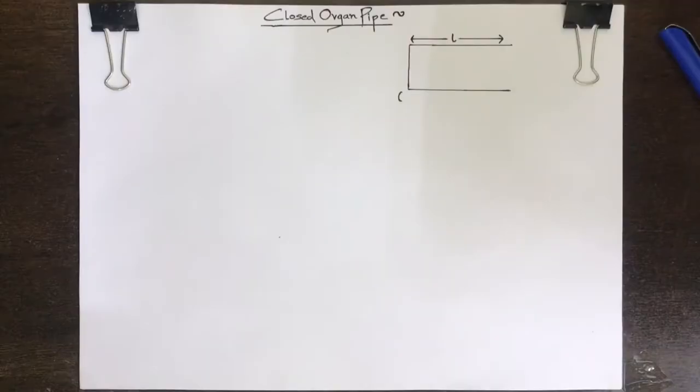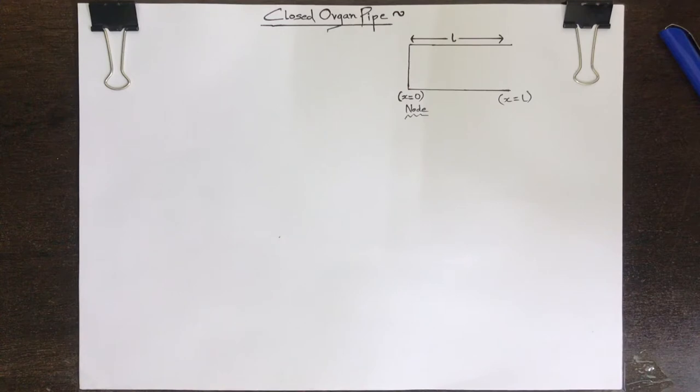At X equals zero, the particles of air have no freedom to vibrate, hence there is always a node at the closed end. On the other hand, at X equals L, the air particles have the greatest freedom to vibrate, hence there is always an antinode at the open end.